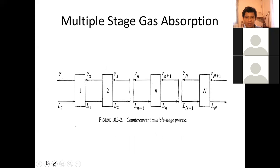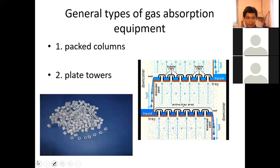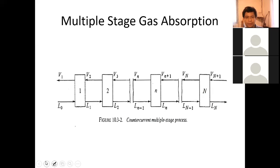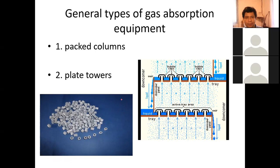Next, we move to multi-stage operation. There are two general types of gas absorption equipment. One is packed columns — you have a cylindrical drum filled with packing materials. The packing materials include Raschig rings, which are cylinders with a height and diameter of about 1 inch and a hole in the middle.